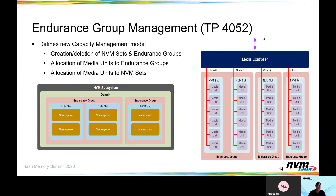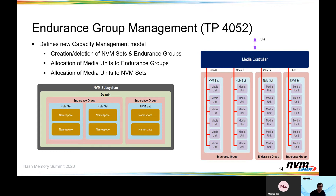Another innovative development this year was endurance group management. The endurance group management technical proposal allows for capacity management — creation and deletion of NVM sets and endurance groups, and allocation of smaller pieces of media to those endurance groups or NVM sets. Historically, you've had to have endurance groups or sets defined from the time the device left manufacturing, but now these functionalities allow you to set up those endurance groups later in the process, providing flexibility for our users.